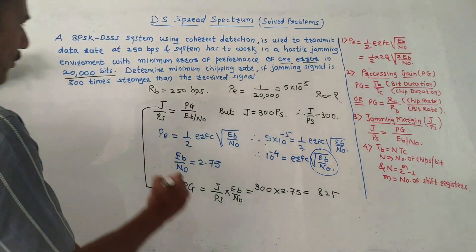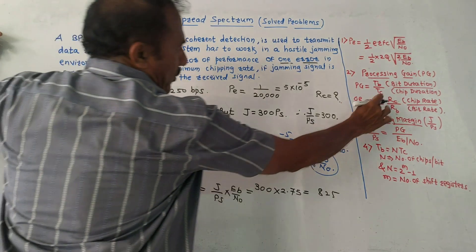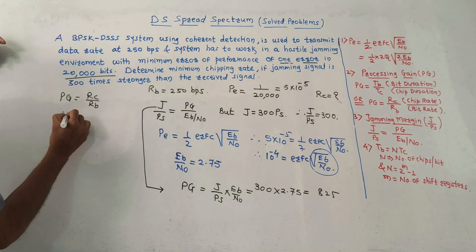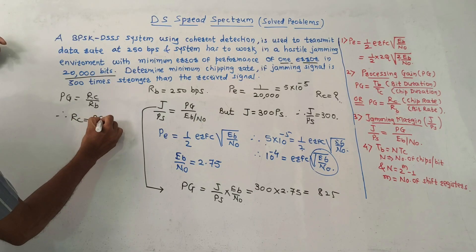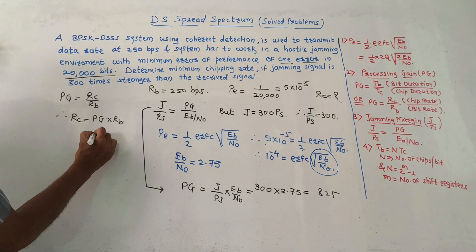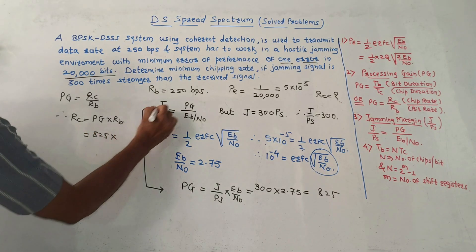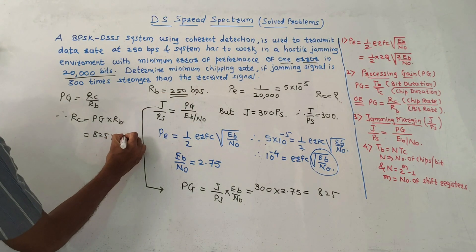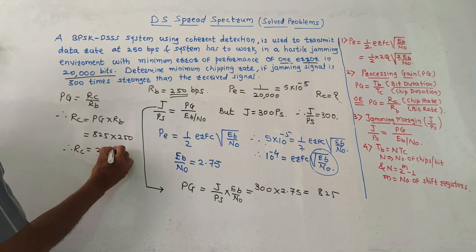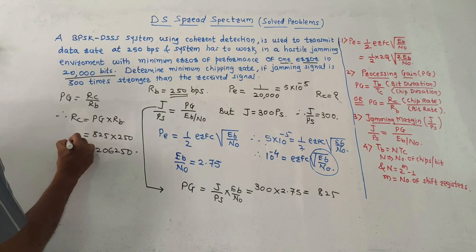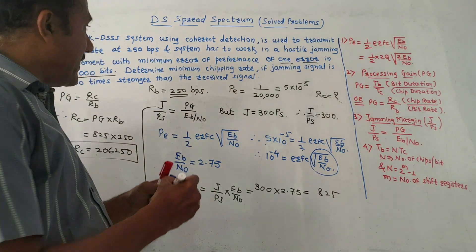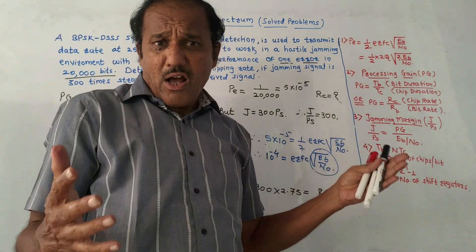Now for the last part, we write the formula: PG equals RC upon RB. Therefore RC equals PG into RB. Putting the values: RC equals 825 into 250 BPS, which gives RC equals 206,250. This is the required value of the chipping rate. This is the way how to solve such numericals.